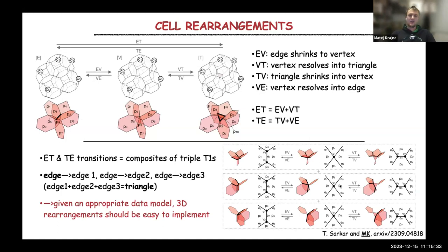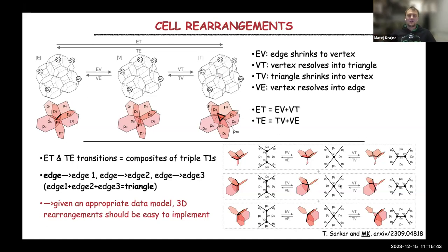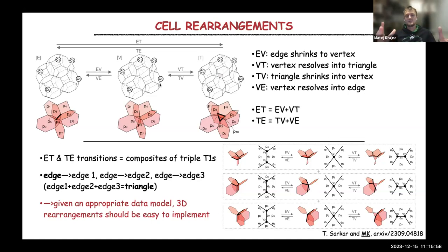This told me that maybe cell rearrangement should not be so difficult to implement because they are just triple T1 transitions and the community knows how to implement T1 transitions. So maybe it's just the data model that is not so appropriate in three dimensions, making it difficult to restitch all these elements when such an event happens.